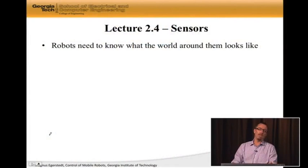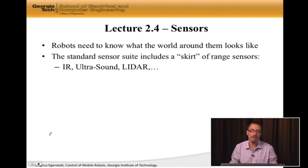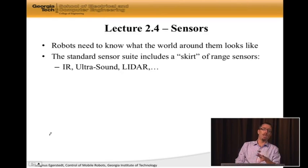We are not going to be spending too much time modeling different kinds of sensors and see what is the difference between an infrared and an ultrasonic range sensor. Instead, we're going to come up with an abstraction that captures what a lot of different sensing modalities can do. And it's going to be based on what's called the range sensor skirt. This is the standard sensor suite on a lot of robots.